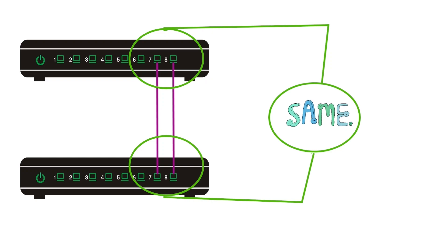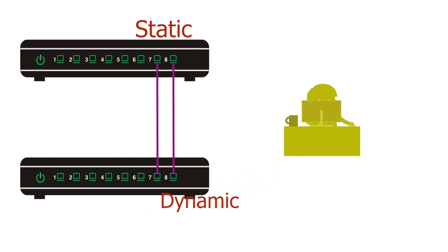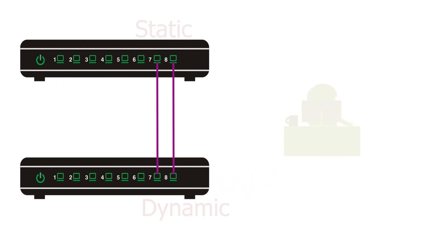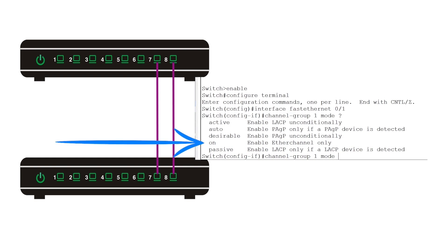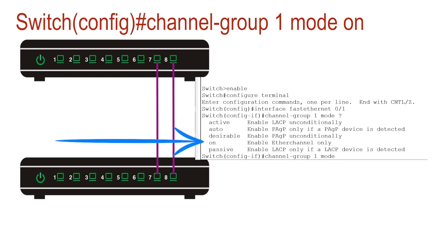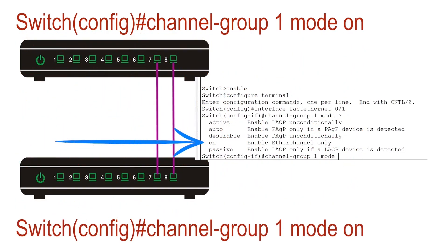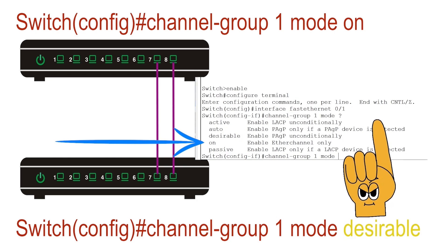Both sides of an EtherChannel must use the same EtherChannel type. For example, we can configure static EtherChannel on both sides, but we cannot configure static on one side and dynamic on the other. Since all EtherChannel types use the same configuration command, we must use the appropriate options. Static EtherChannel uses the 'on' option. The 'on' option unconditionally enables EtherChannel — if we use it on one side, we must use it on the other side; we cannot mix it with active, passive, auto, or desirable options.